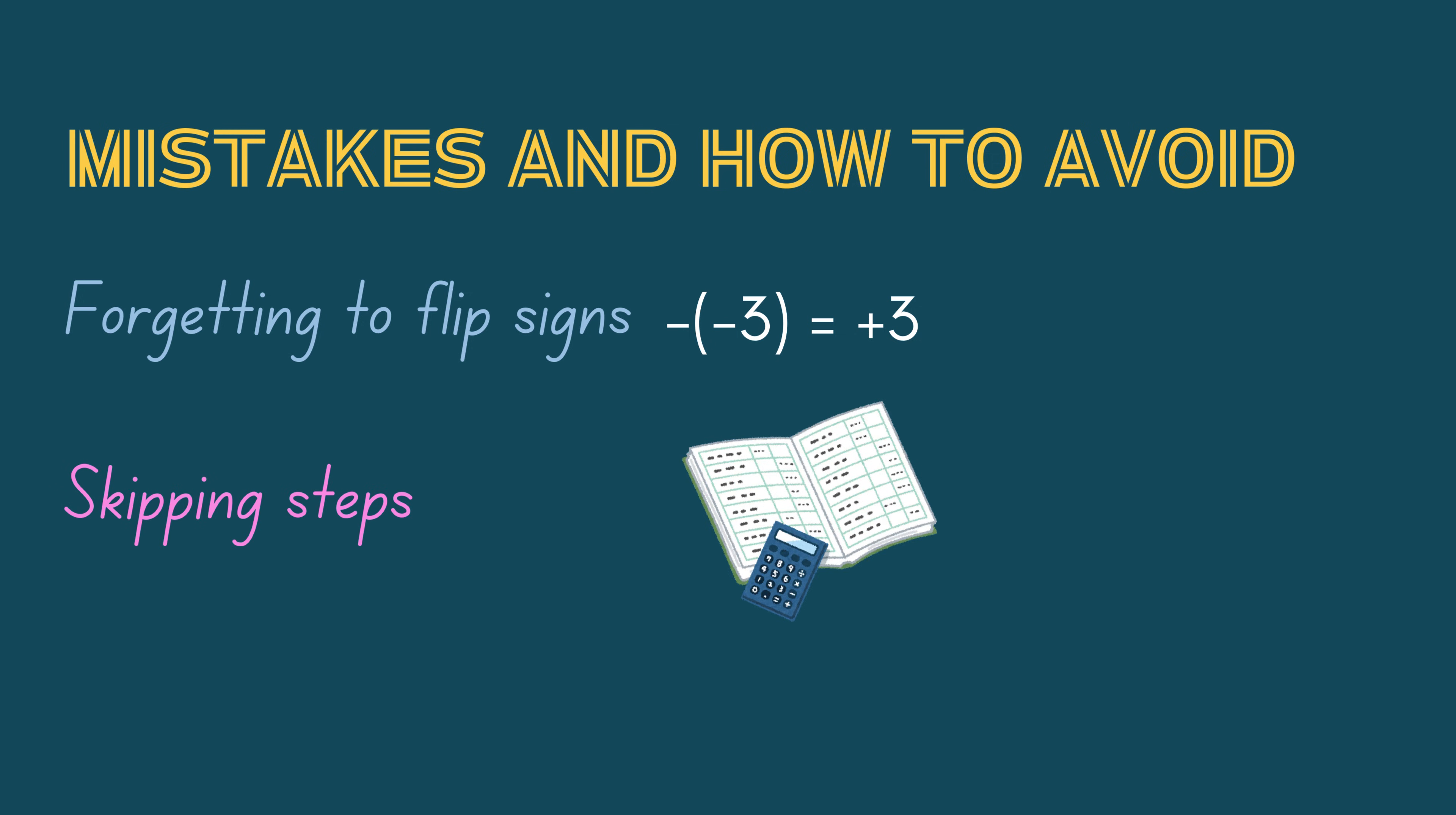The second most committed mistake is skipping steps. Always write out each step to avoid errors. And yes, during calculations, mixing up variables happens. So if you have both x and y, keep track of which is which.